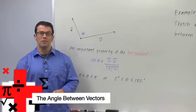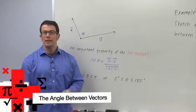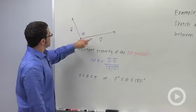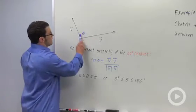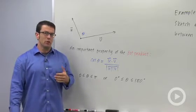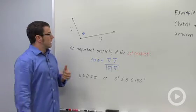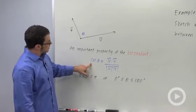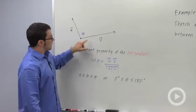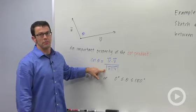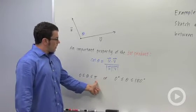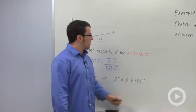I want to talk about a really important property of the dot product. It can be used to find the angle between two vectors. Say we have two vectors u and v. Theta here is the angle between them, and it's going to be some angle between 0 and pi. The cosine of theta equals the dot product of the two vectors divided by the product of their magnitudes. Theta will always be between 0 and pi, or 0 degrees and 180.